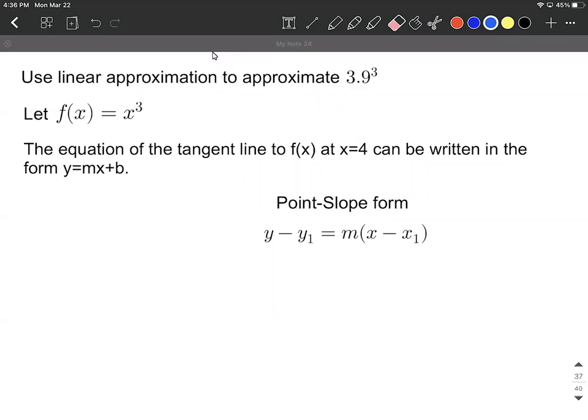We want to write this in the form y equals mx plus b. To get there we're going to start with the point-slope form of a line: y minus y1 equals m times x minus x1. For this formula to work we're going to need a point that's on our line and we're also going to need the slope of our line.